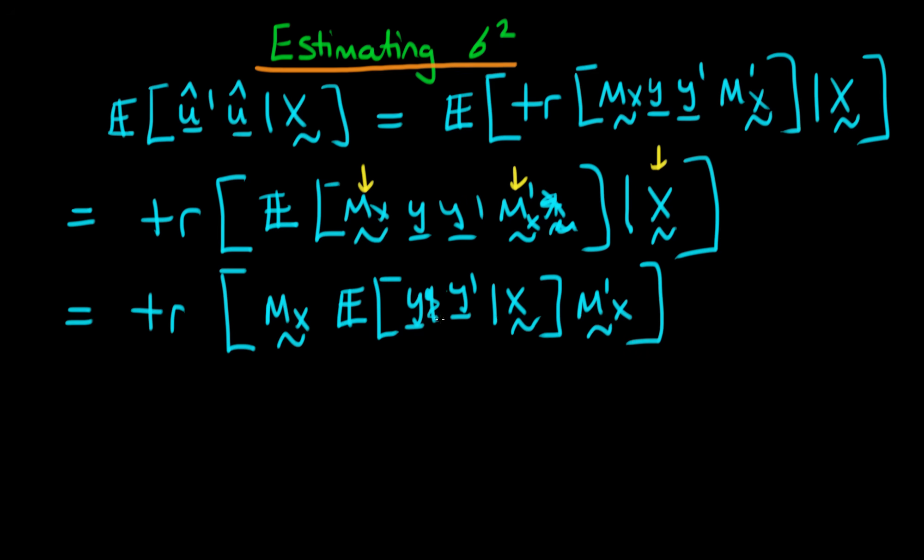And we know that the expectation of y times y primed given x is just going to be equal to the identity matrix times sigma squared.